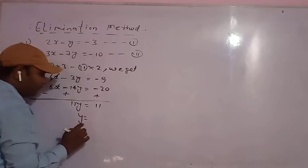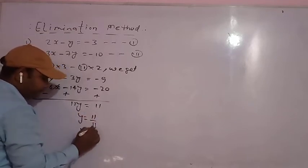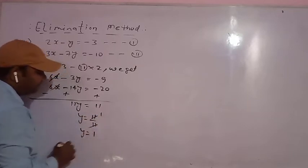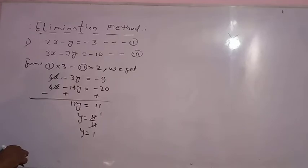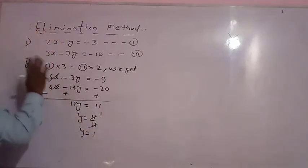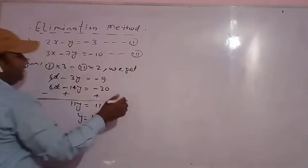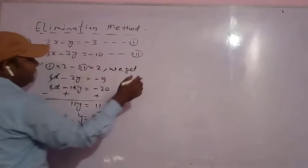Now we write 11y equals 11, so 11 by 11 equals 1, meaning y equals 1. This is the popular elimination method — lots of students like it. Now we will put the value of y in equation first or second.